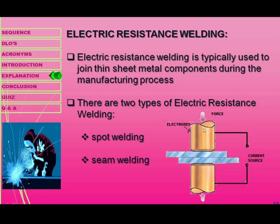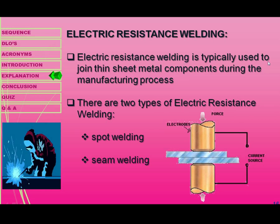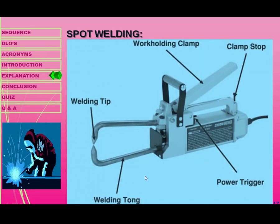Electric resistance welding works by applying force and using electrodes connected to a current source. Force is applied from the upper and lower sides, creating an arc that produces resistance and forms a joint between two metals. Electric resistance welding is typically used to join thin sheet metal components during the manufacturing process. There are two types: spot welding and seam welding.